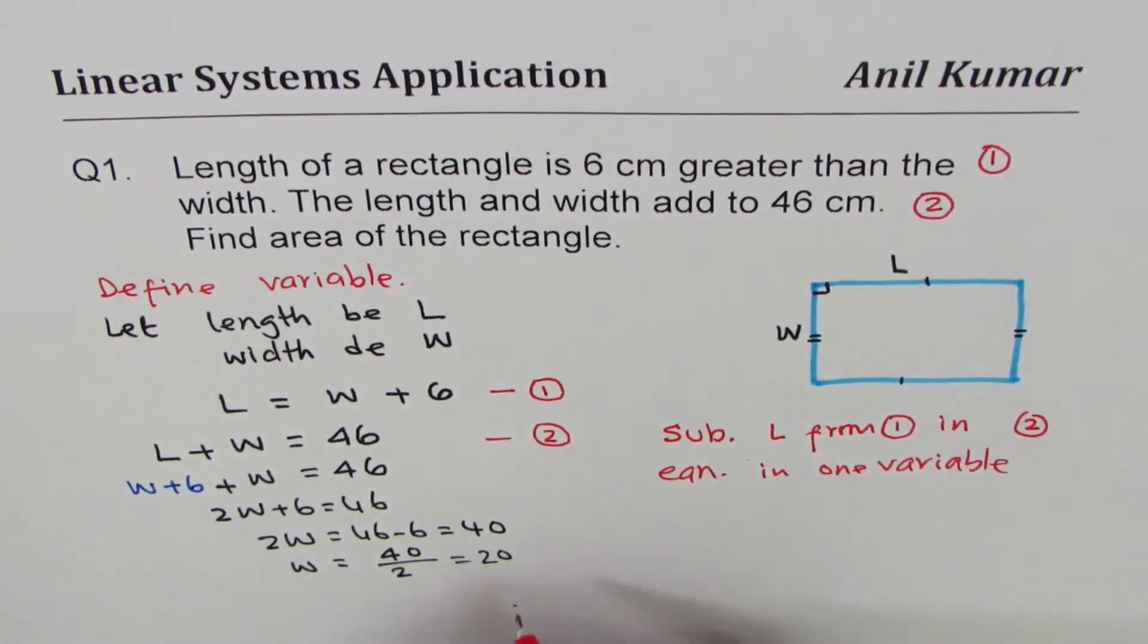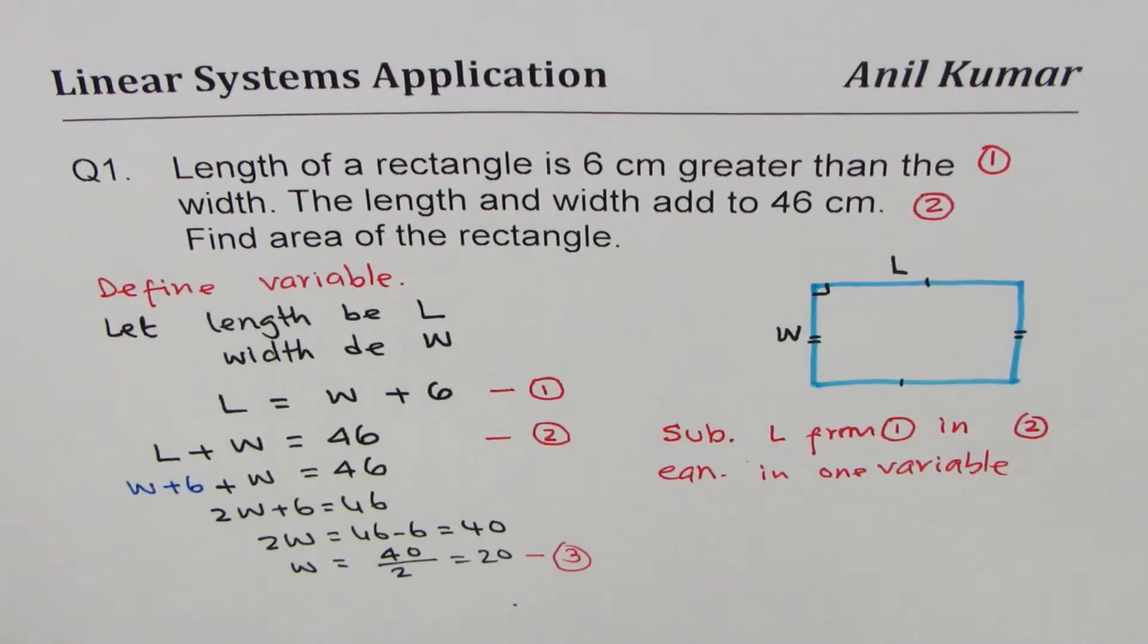We get the value of W. So at least we have found one of the variables. I'm writing this as equation number three. How do I find length?